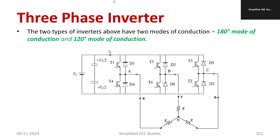Now I will show you the circuit diagram of the three-phase inverter. We have the DC supply — VD stands for DC supply. Here you can see VD/2 and minus VD/2, so we are using a capacitor potential divider. We have six switches: T1, T3, T5 and T2, T4, T6.